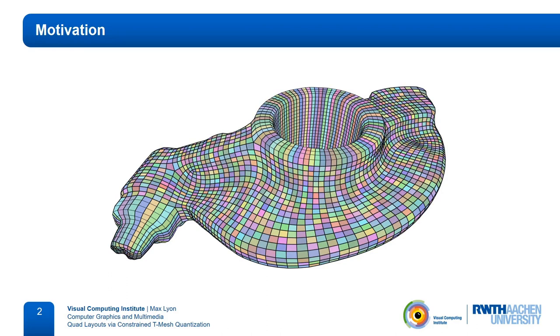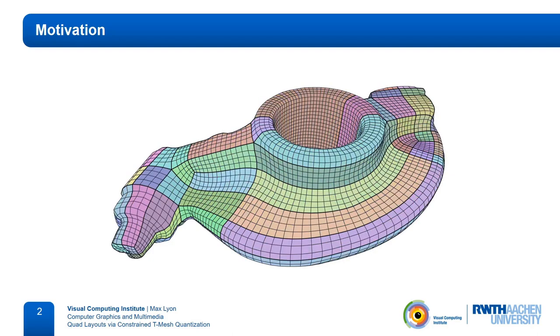Ideally, the quad meshes should have a simple base complex, or quad layout, consisting of few patches. Such layouts enable for example the approximation of the surface with few spline patches or the use of efficient multi-grid solvers.